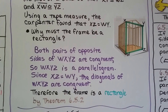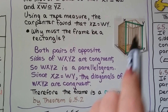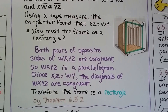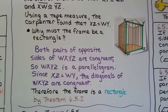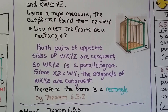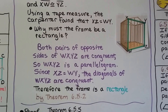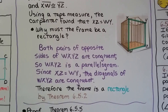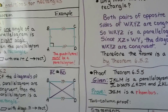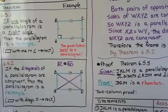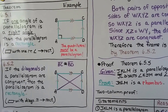Since XZ is equal to WY, the diagonals of WXYZ are congruent. Therefore, the frame is a rectangle by Theorem 6.5.2 — the diagonals are congruent, so it's a rectangle.